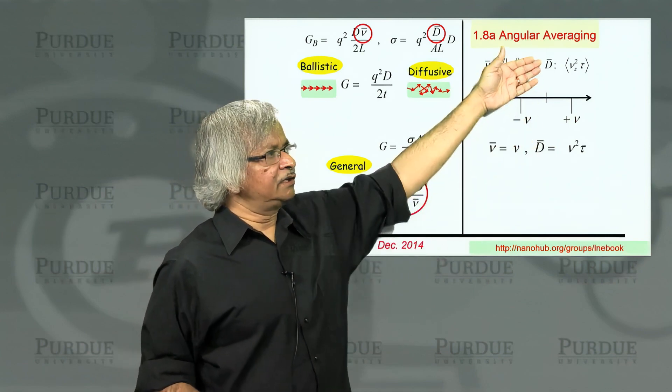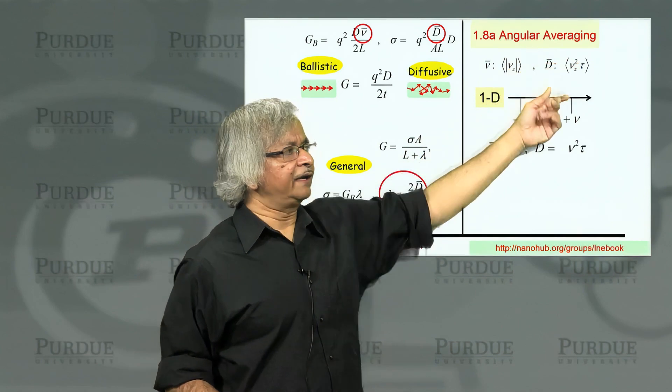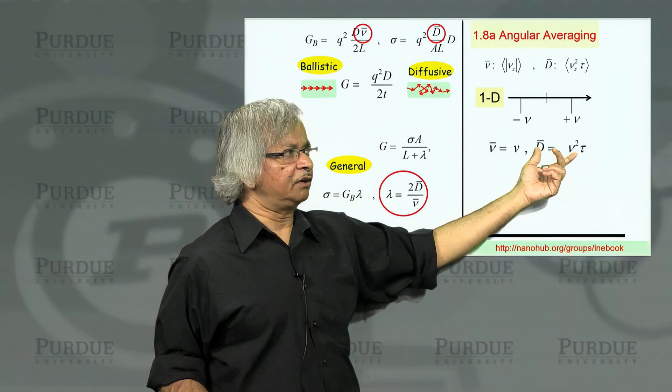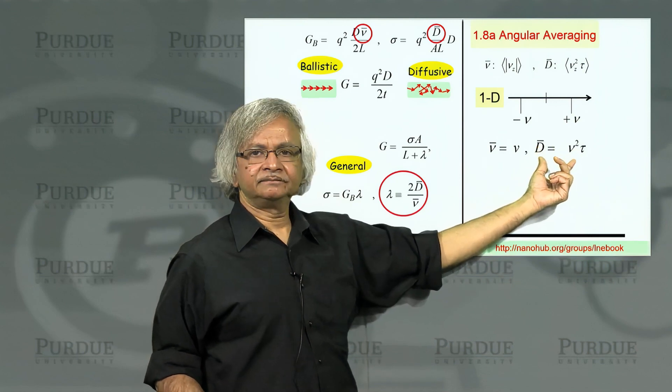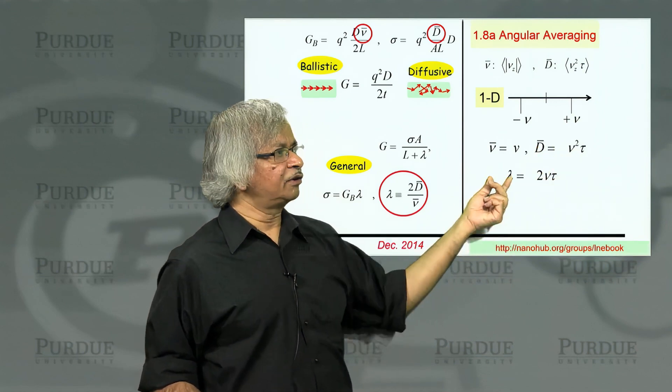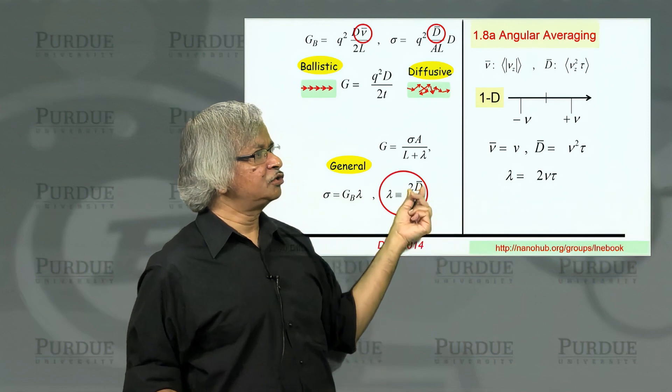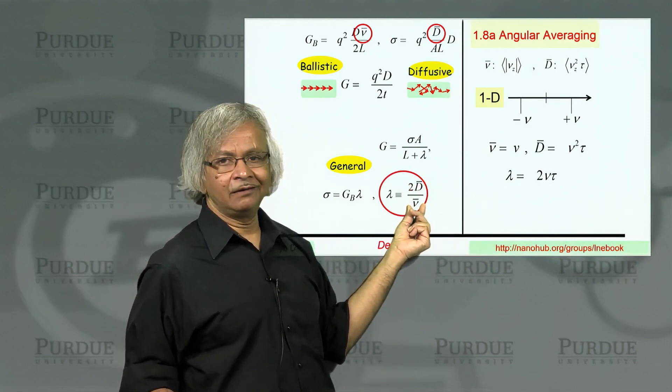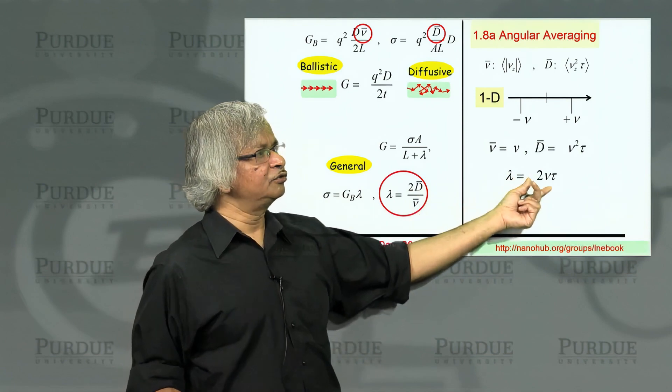What about the diffusion coefficient? Well, that's vz squared tau. Again, two possible values, each is equal to v square tau. So you can just write that. And then, what we call lambda is this 2D over v, 2D bar over v bar. And when you put that in, you get 2v tau.